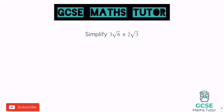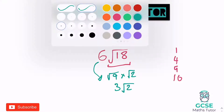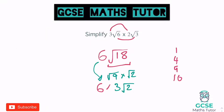Okay so 3√6 times 2√3. Numbers multiply numbers: 2 times 3 is 6. The surd multiplies the surd: √6 times √3 is √18. Now 9 goes into 18, so we can simplify √18 — ignore the 6 for now. √18 is √9 times √2, which is 3√2. Then reintroducing that 6, because we've got 6 lots of 3√2, that gives us 18√2 as our final answer.